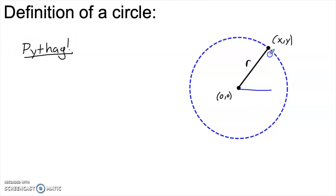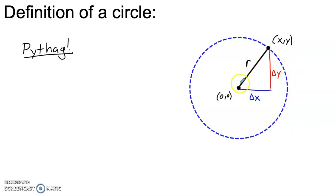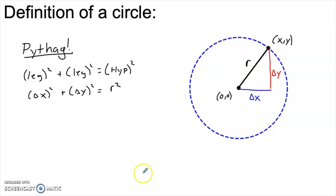If I create a right triangle with a horizontal and vertical line, the horizontal component is my delta x and the vertical component is my delta y between the center and the point x, y on the circle. That means the hypotenuse is the radius. Pythagoras tells us that leg squared plus the other leg squared equals the hypotenuse squared whenever we have a right triangle.